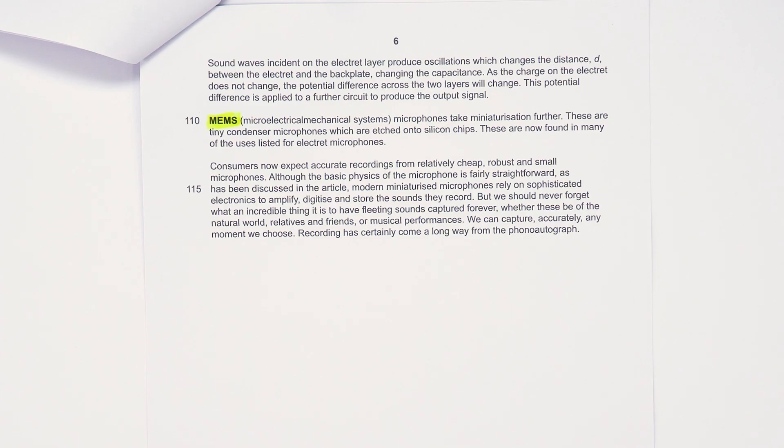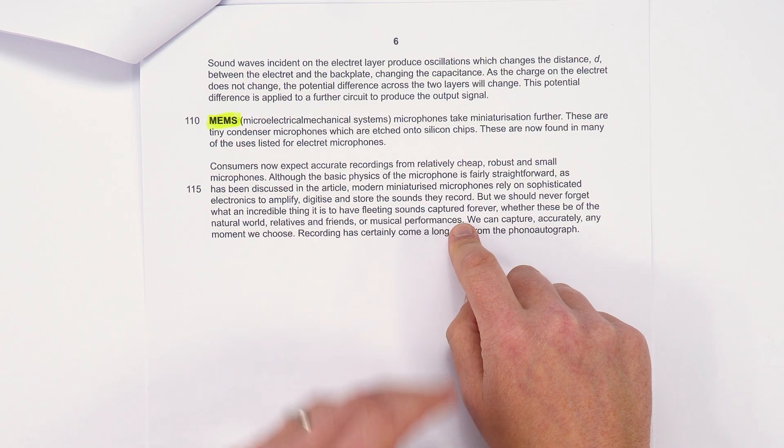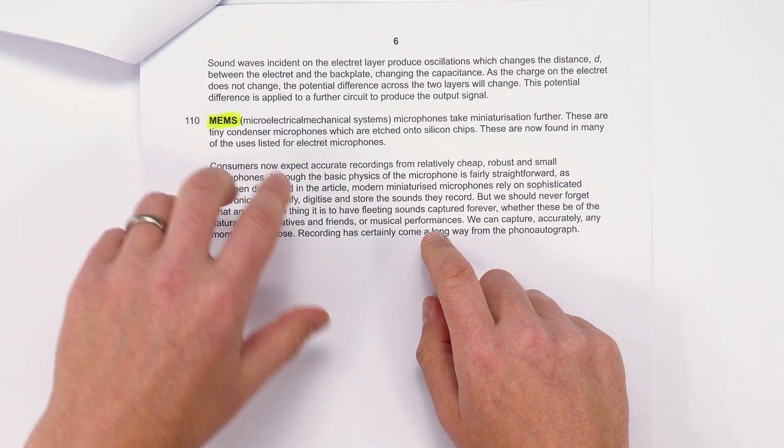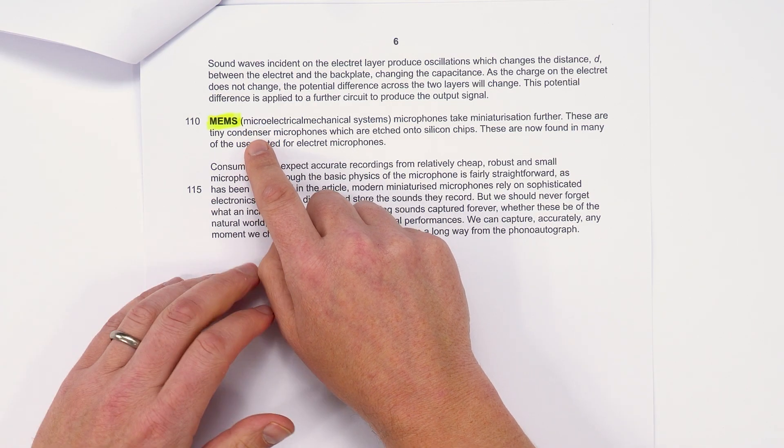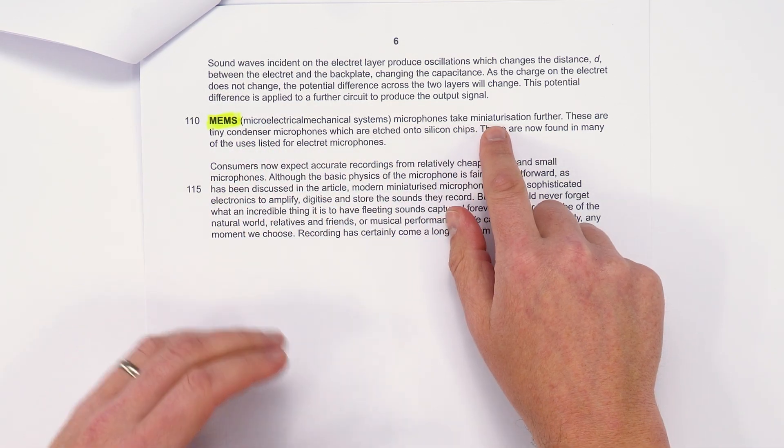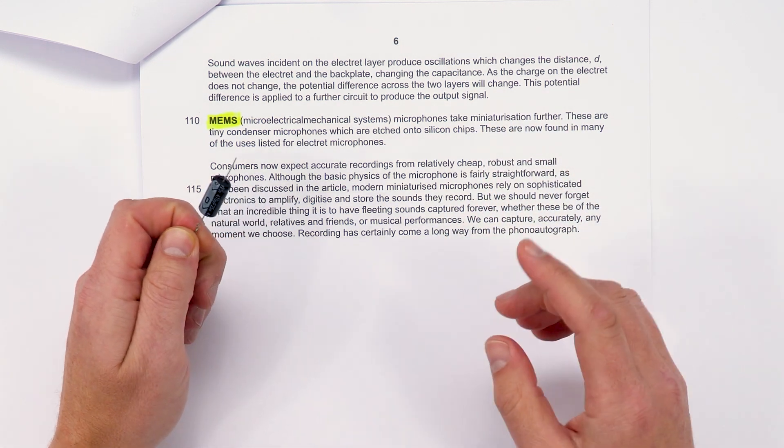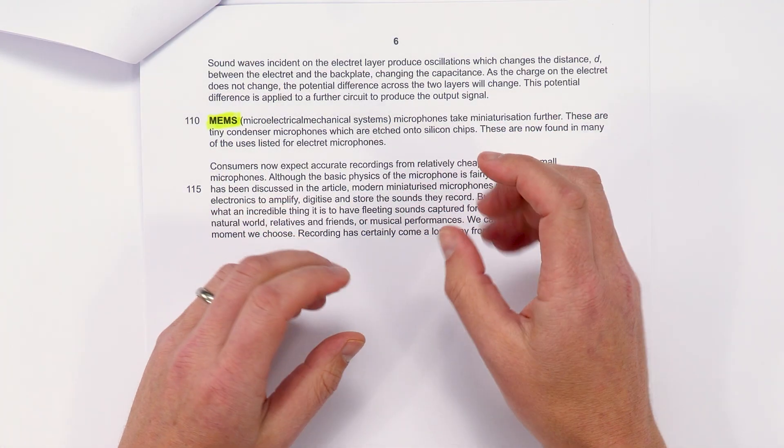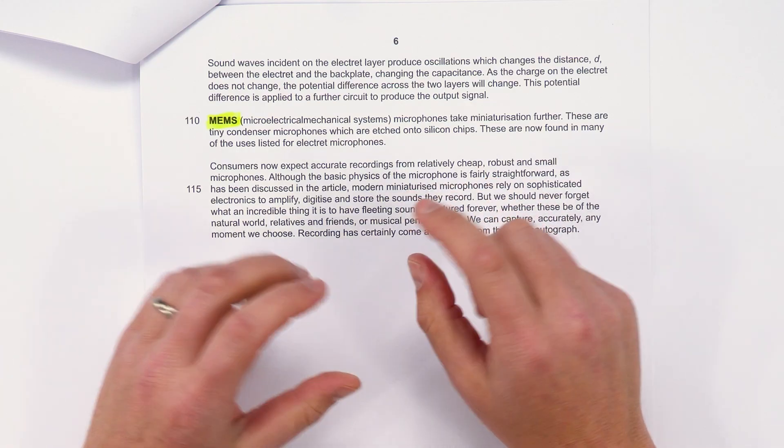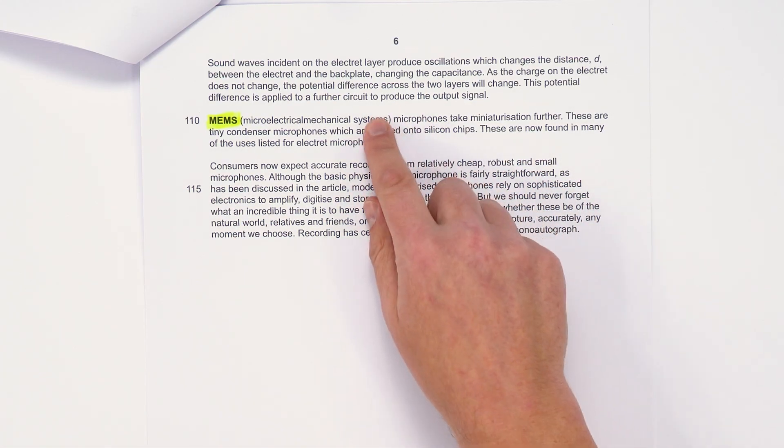Finally we have these MEMS—micro electrical mechanical systems—which make microphones even smaller. There's nothing here really about how they work. Obviously it's worth having a quick Google and finding out a bit more about these, but I don't think there's going to be a question so much on how these work. Potentially there could be a question linked to the fact that we've got miniaturization in the future. Rather than thinking about microphones using capacitors and being a physical big thing, these things can actually pick up sounds even though you can hardly see them. There may be a social question about how these could be used in the future.